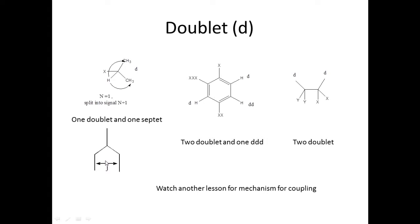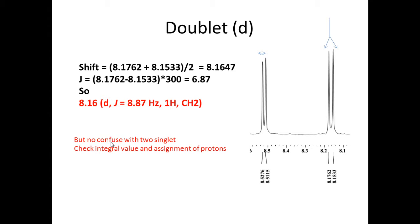The J value is considered as this. We're making the tutorial how this J value is coming, why this is spreading in next tutorial. So the coupling is calculated: shift is average of the two signals. This is a doublet, this is a doublet. So we have two peaks and J is equal to difference times 300, which is the frequency of the megahertz, the frequency of the megahertz in spectrophotometer, is equal to 6 points. So you can write here is a doublet, J = 8.87 hertz, 1H, and CH2.